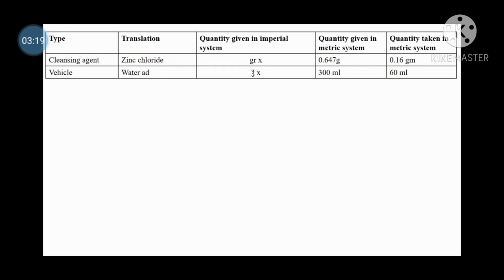Water which is used as a vehicle. Quantity given in Empirical System that is up to 10 ounces. That 10 ounces is nothing but 300 ml. So that is Quantity given in Metric System 300 ml. Quantity taken in Metric System 60 ml.